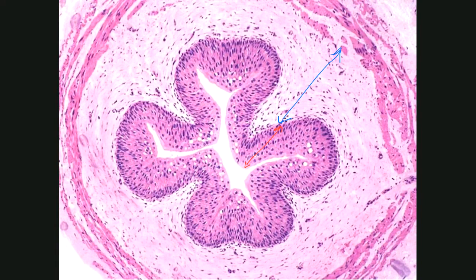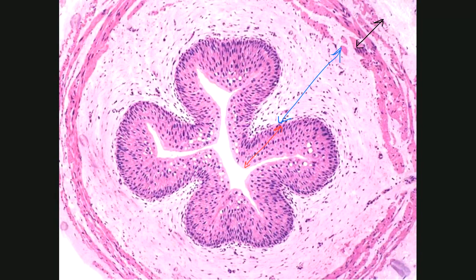After that, we have the tunica muscularis or muscularis externa. In the tunica muscularis, we have two layers of muscles, but the orientation is opposite to the digestive system: inner longitudinal and outer circular muscle. The last layer in the wall is called tunica adventitia.